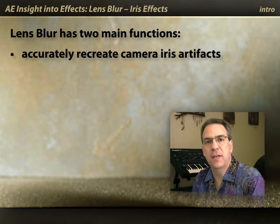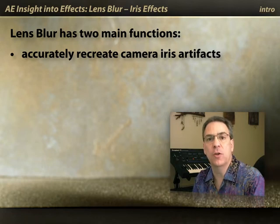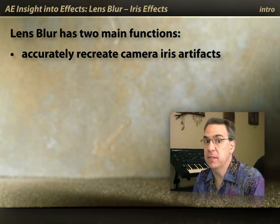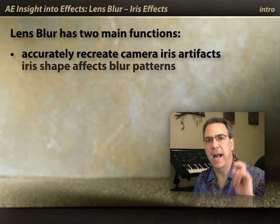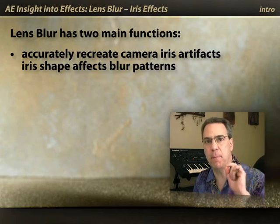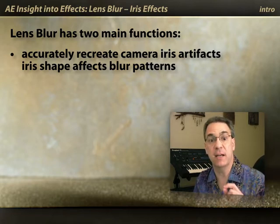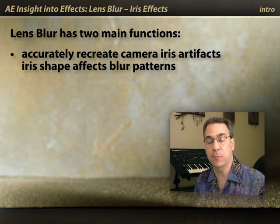Lens Blur has two purposes in life. One is to accurately recreate what happens with a real camera when there are bright, out-of-focus objects in the scene. Those objects aren't just fuzzy little details in the background — the iris and the shutter shape of that iris affects the pattern of the blurred objects, particularly bright objects. Lens Blur recreates that effect, particularly useful if you have a synthetic shot that you want to make look like it was shot on a real camera.